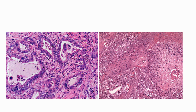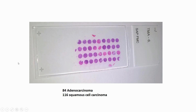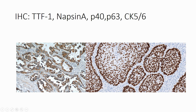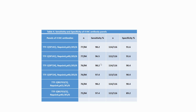It is important to retain as much tissue as possible, especially in small biopsies, for further molecular testing. We have used tissue microarrays containing 160 squamous carcinomas and 84 adenocarcinomas, and labelled them with different antibodies for TTF-1, including several clones for TTF-1, napsin-A, p40, p63, and CK5/6.